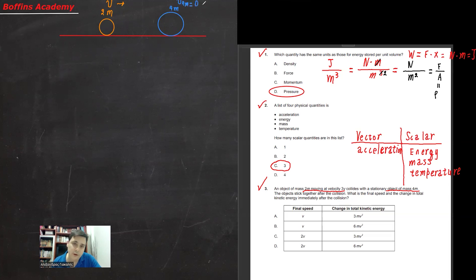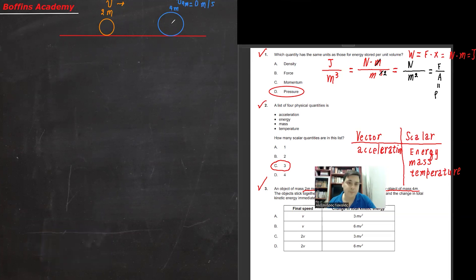Now let's assume that this is the initial state. This is before the collision. This is before the collision.